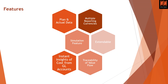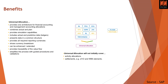Benefits: universal allocation is one architecture. You merge everything — GL, profit center accounting, cost center accounting, COPA, subsidiary ledger, intercompany — into one combined actual and plan. Previously that was never there. Now you can have actual vs. plan, simulation capabilities, currency breakdown, end-to-end traceability, and a simplified process. Universal allocation will not initially cover activity and settlement, which is still on the product roadmap.